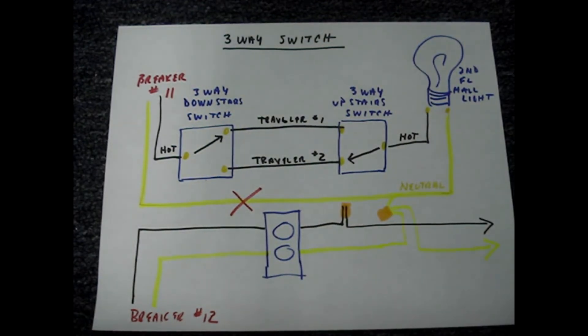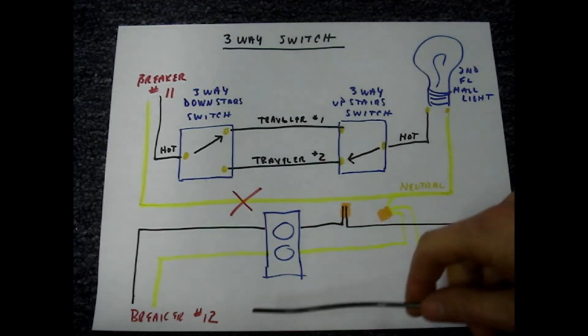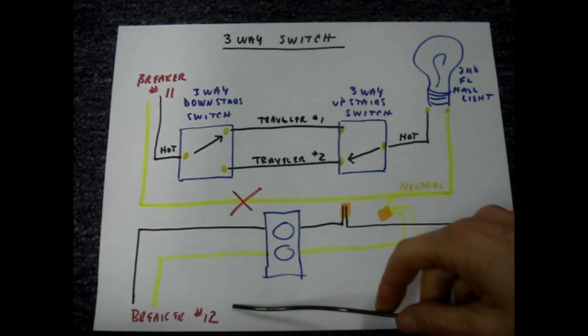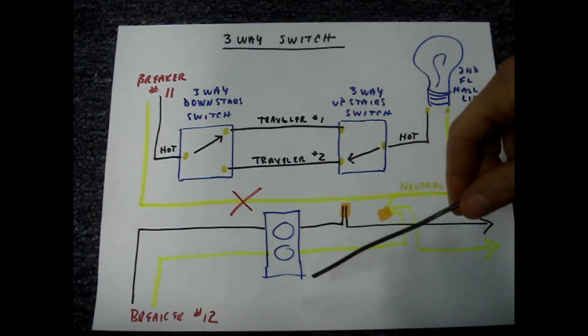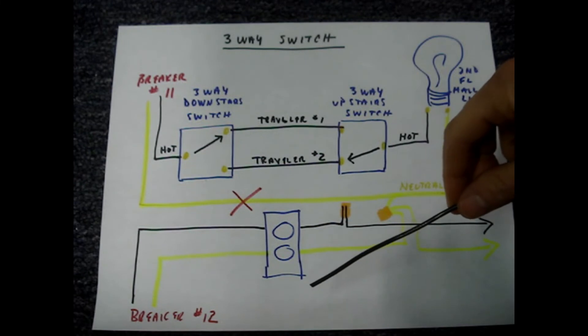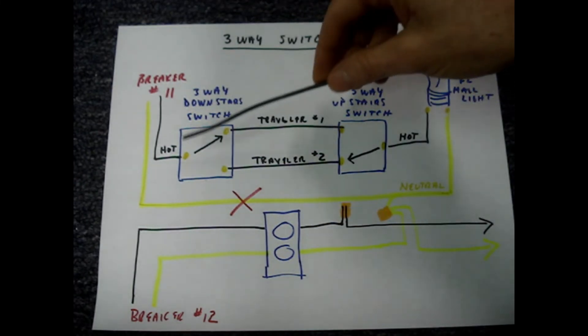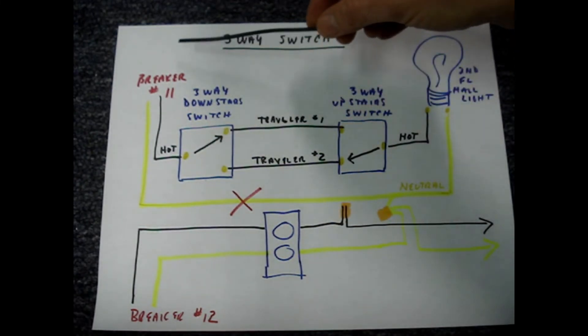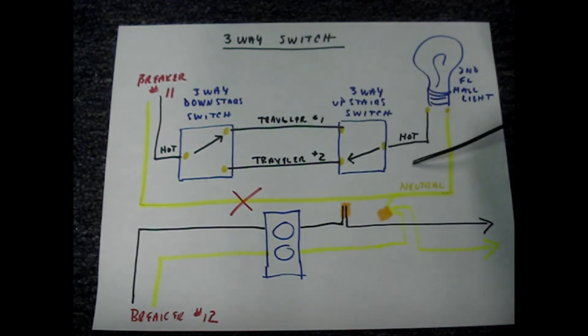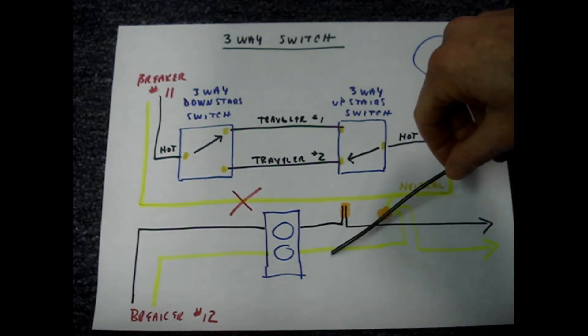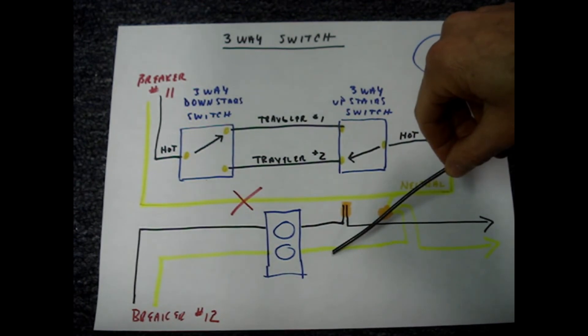The danger with this circuit is that if you were to turn breaker 12 off to do work and check for voltage and it's safe, while you're doing work somebody turns one of the switches on which would send the hot from breaker 11, which isn't turned off, through the switches, illuminate the second floor hallway light, and then it would return on this neutral and now the circuit that you're working on has become energized.